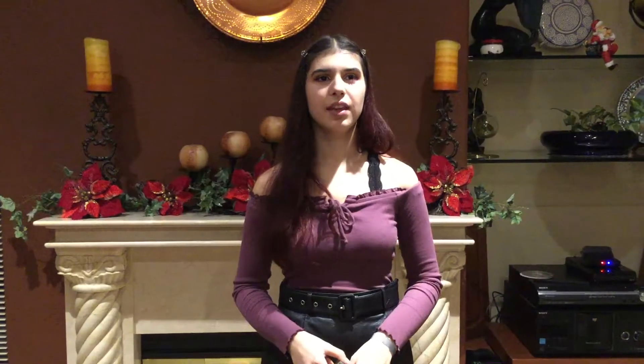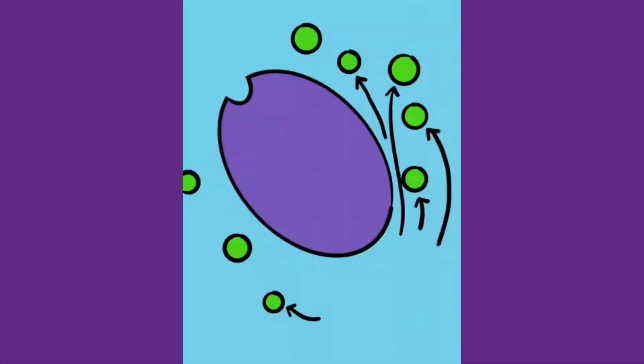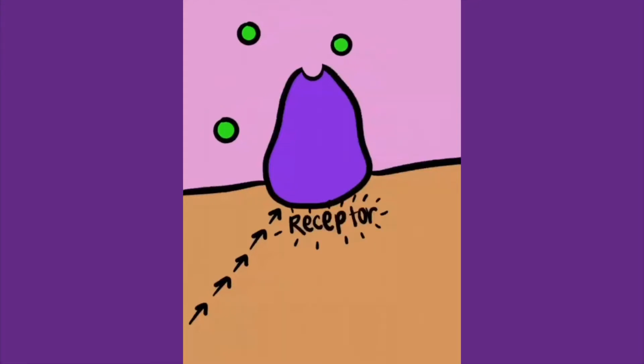Luckily there is one. It's known as quorum sensing inhibition. In order to understand how quorum sensing inhibition works, we first need to understand how bacteria communicate. Bacteria are constantly sending and receiving signals, known as auto-inducers. They are received by a receptor protein on the bacteria that fits together with the auto-inducer like a lock and key. This means that the bacteria can only receive signals that are designated for that receptor.